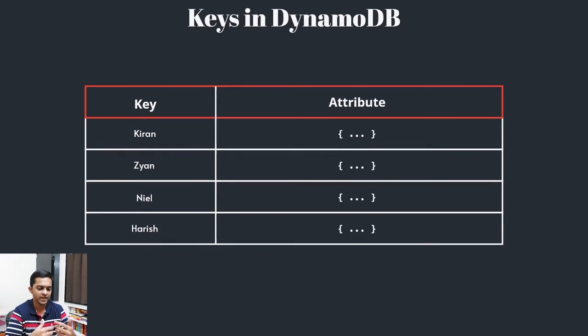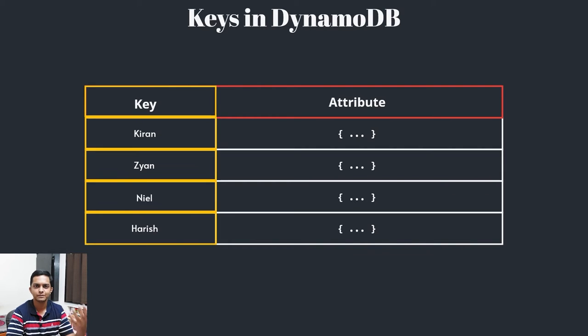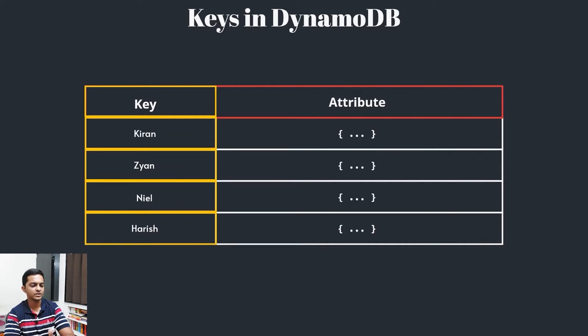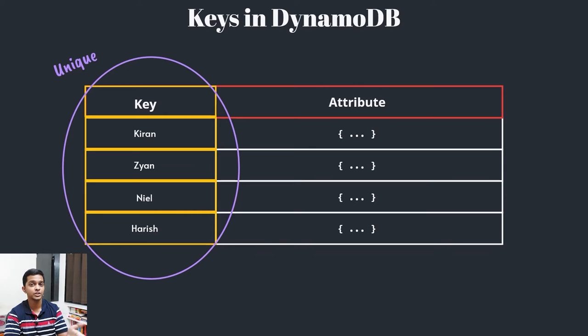Now it's time to really understand how data is stored inside DynamoDB and how we can model our queries based on that pattern. This is a bare minimum representation of a DynamoDB table. Each individual attribute is classified as a key. Just like every other database has its own unique functionality — for example in MongoDB it stores based on its own unique ID — in DynamoDB, if you're using only one pattern, like student name, each student name should by definition be very unique.